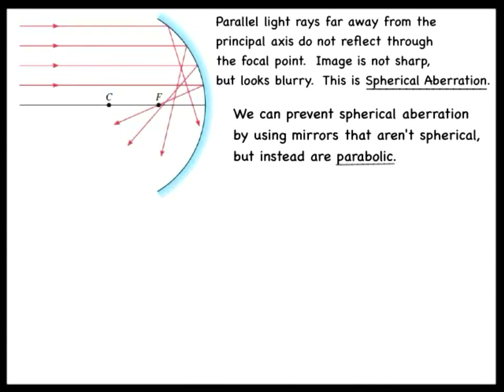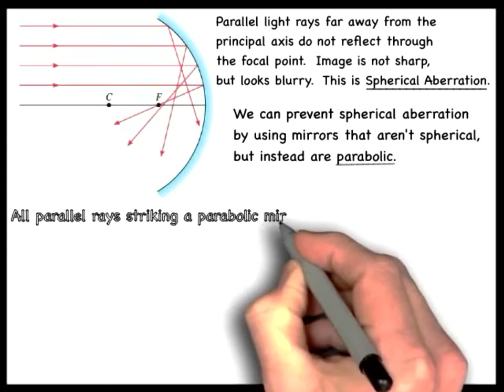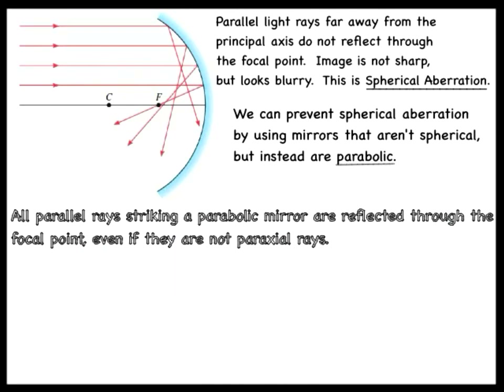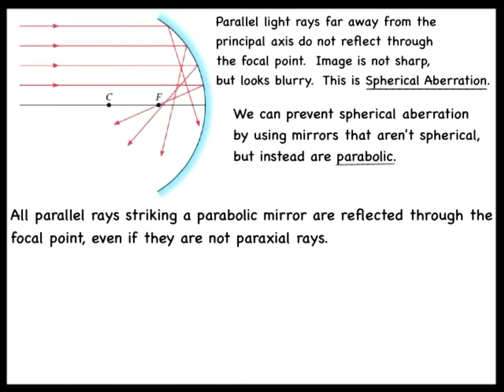All parallel rays, regardless of their distance from the principal axis, get reflected through the focal point of a parabolic mirror.